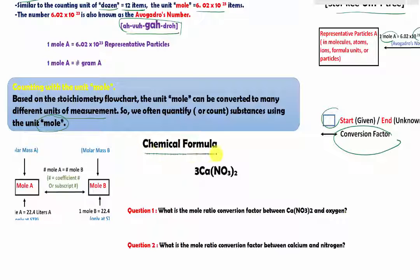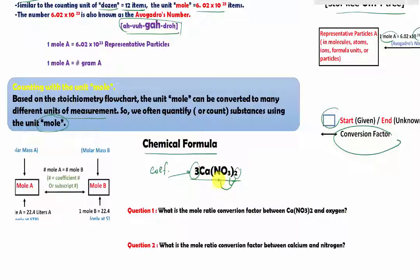One place we quantify chemicals is in a chemical formula. Here I have calcium nitrate with a coefficient of 3. Calcium nitrate is made of calcium and nitrate. We can say we have three moles of calcium nitrate. This consists of one mole of calcium. The subscript distributes: 1 × 2 gives us two moles of nitrogen, and 2 × 3 gives us six moles of oxygen.